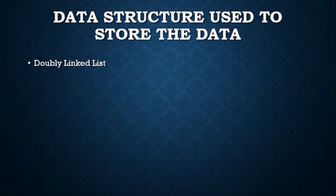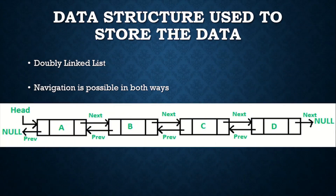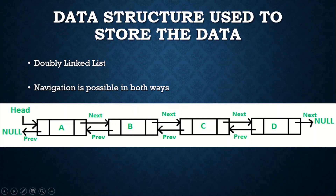Now let's see what data structure is actually used to store data in LinkedList. As we discussed, it uses a doubly linked list. A doubly linked list is one where navigation is possible in both directions. It has three components: two are links and one contains the data. The first link holds the memory address of the previous element, and the last link holds the memory address of the next element.